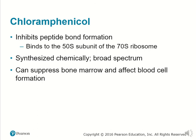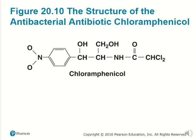Chloramphenicol inhibits peptide bond formation. It binds to the 50S subunit of the 70S ribosome, and it is synthesized chemically with a broad spectrum of effect against many microbes. However, it does have the ability to suppress bone marrow and affect blood cell formation, which is an unhealthy side effect. Its general structure includes a nitrated aromatic ring, alcohol functional groups, and a ketone group.